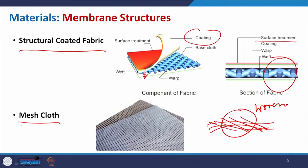Compared to the structural coated fabric, the mesh cloth is interlaced — the fibers are tangled with each other in an interlacing form, which gives some kind of stiffness to the membrane.